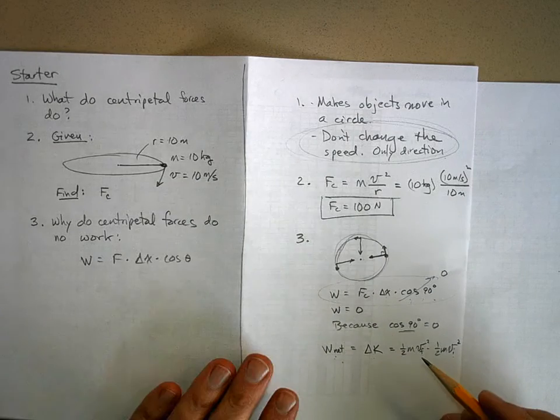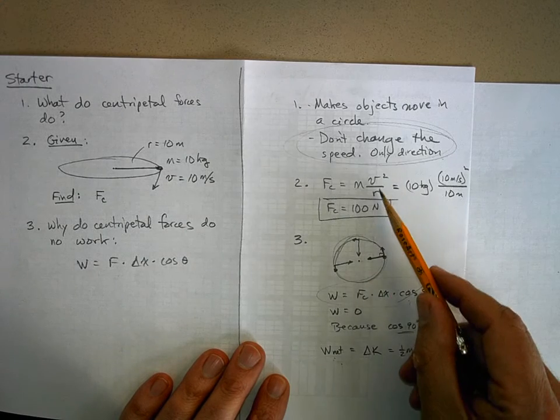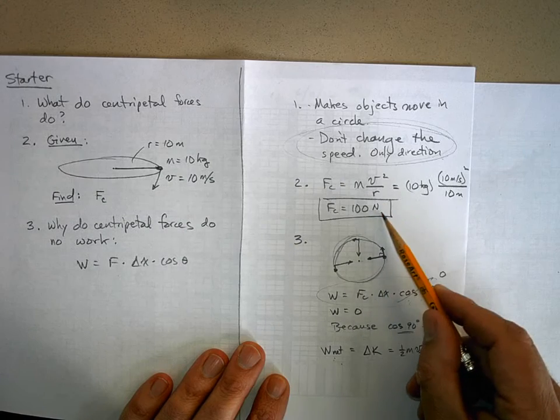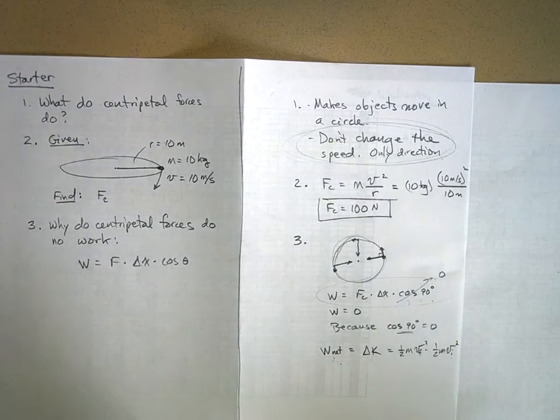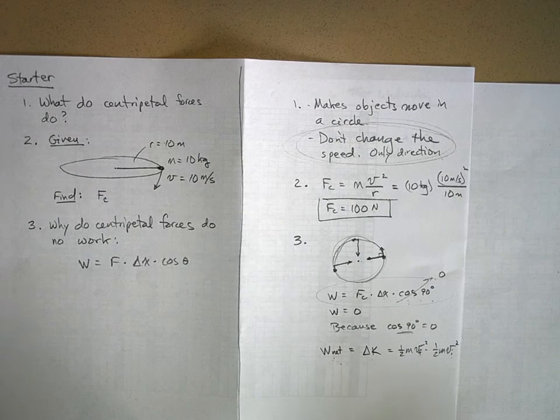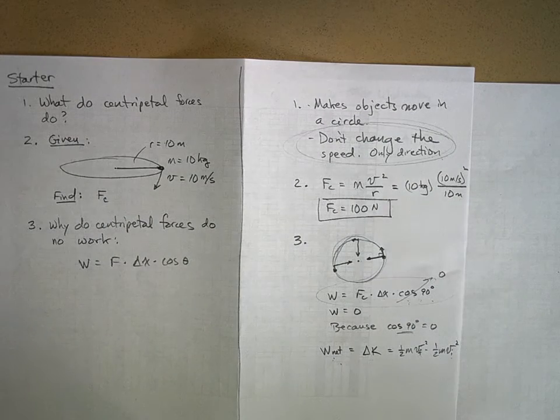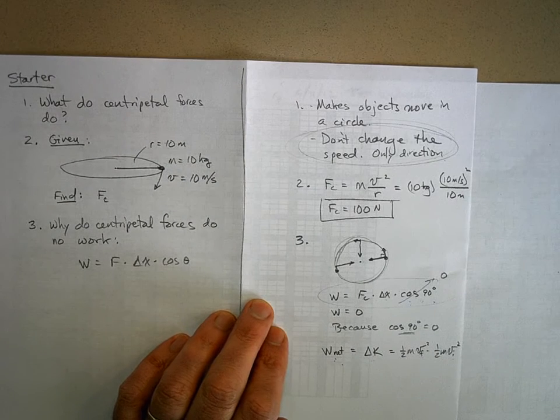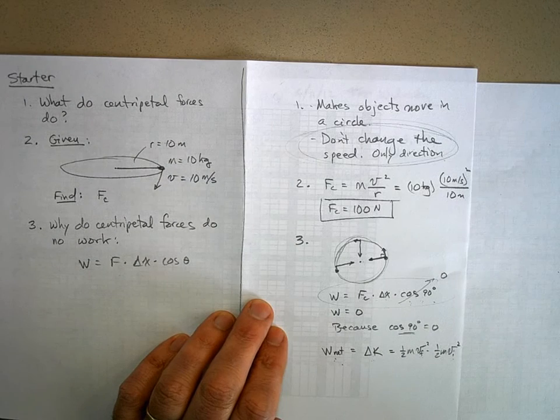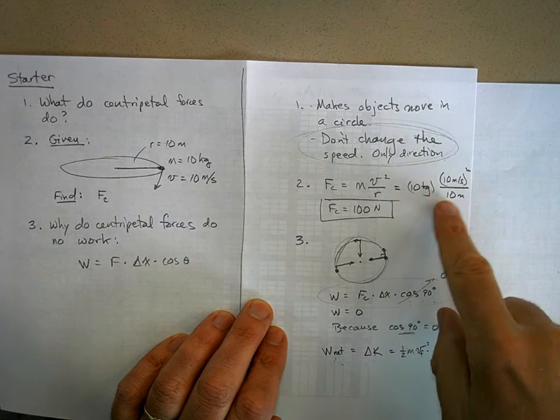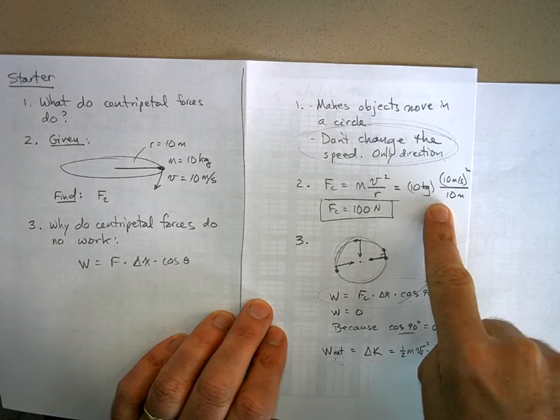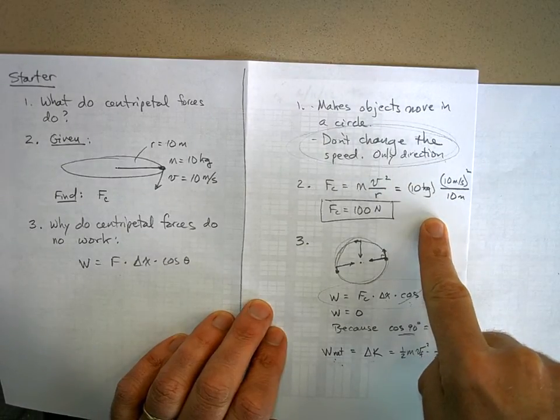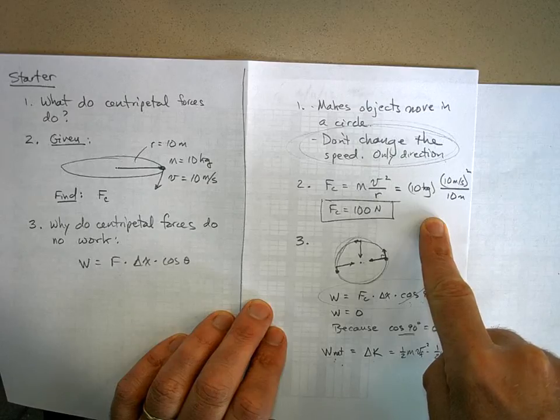And then number two, centripetal force is mv squared over r. You plug in your numbers, you get a hundred newtons. Now on the state standards test and on the final exam, you're not going to be allowed to use a calculator. The problems are this hard in terms of arithmetic. If you need a calculator, you're either doing it wrong or you need to repeat sixth grade or something. The arithmetic is super simple.